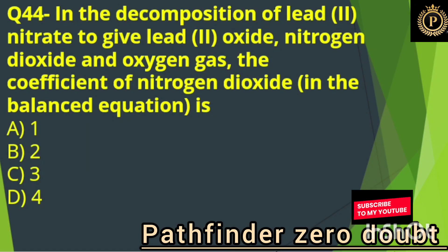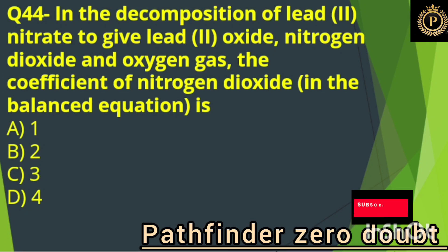In the decomposition of lead nitrate to give lead oxide, nitrogen dioxide, and oxygen gas, the coefficient of nitrogen dioxide in the balanced equation is: Option D, 4.